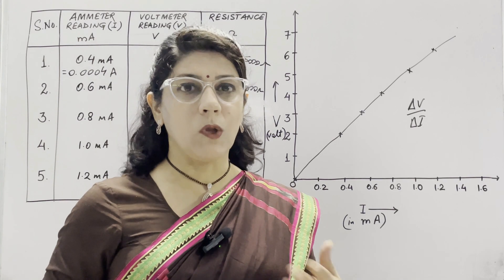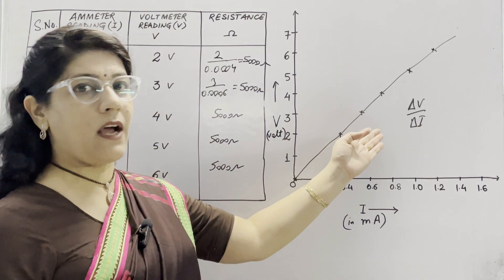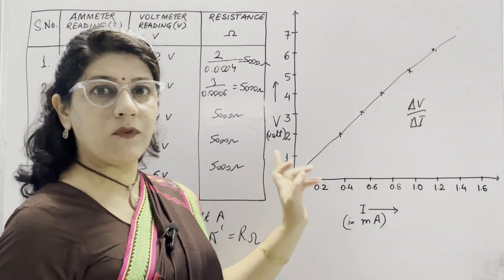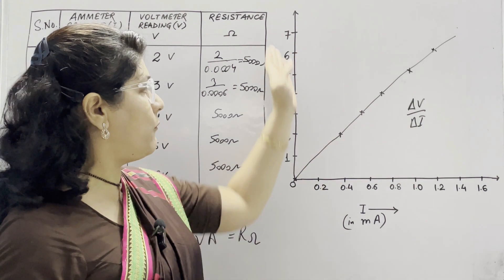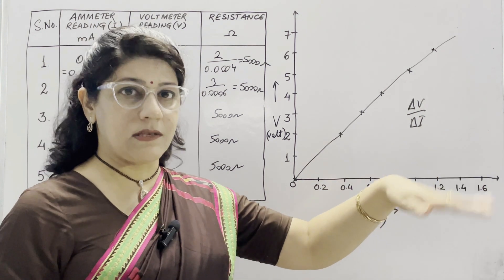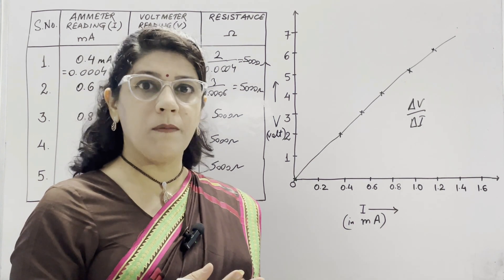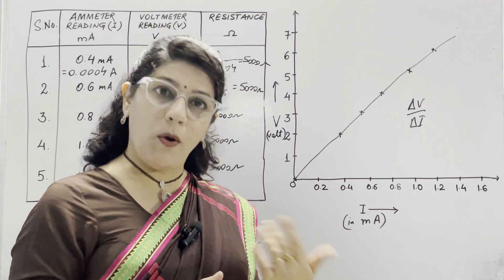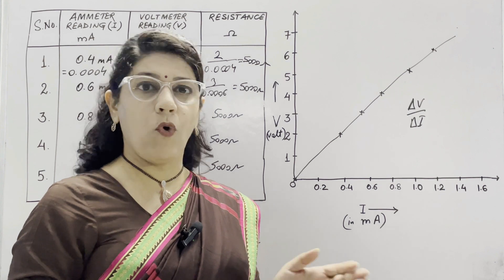Conductors which obey Ohm's law are known as Ohmic resistors. They show a straight-line graph starting from origin, because delta V upon delta I is constant and resistance comes out to be the same irrespective of the value of voltage or current. Examples are all metallic conductors like copper, silver, aluminum, iron, nichrome, and copper sulfate solution with copper electrodes, and dilute sulfuric acid.